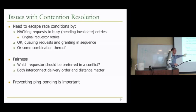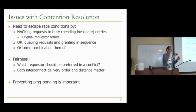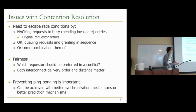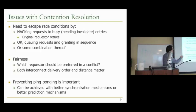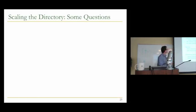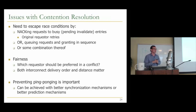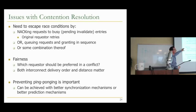Ping-ponging can be addressed with better synchronization mechanisms or prediction — you predict who will request the block next and proactively supply it to them. This gives you an idea of the scale of issues a directory-based protocol must handle when you have tens of thousands of processors. These problems are very interesting to national labs running huge supercomputers for scientific problems like weather prediction, bomb simulations, and plane simulations.